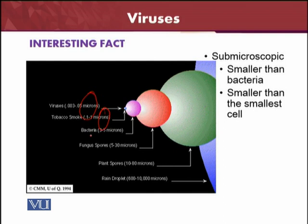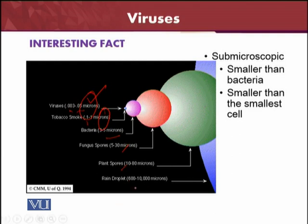These are the viruses given in this slide — historical viruses which were discovered for the first time. Some viruses are 0.003 to 0.05 microns, the very smallest ones. Then the tobacco mosaic virus, which is a virus of plants discovered some years ago, is 1.1 to 1 microns. Then there are bacteria, fungus, plant spores, and rain droplets which we can use to compare the different sizes of the viruses. You can see here how much smaller viruses are compared to other particles present in the atmosphere.